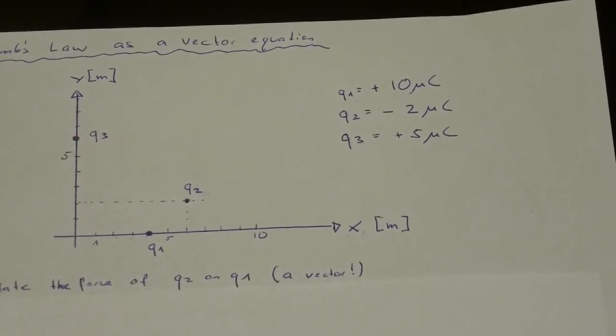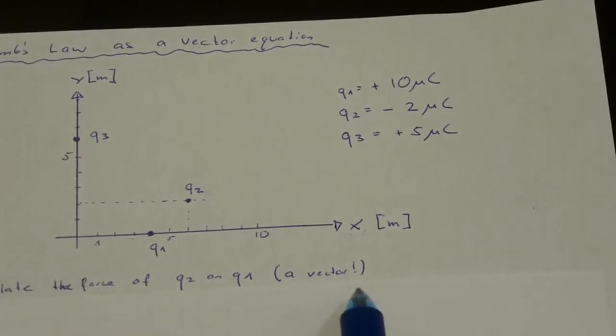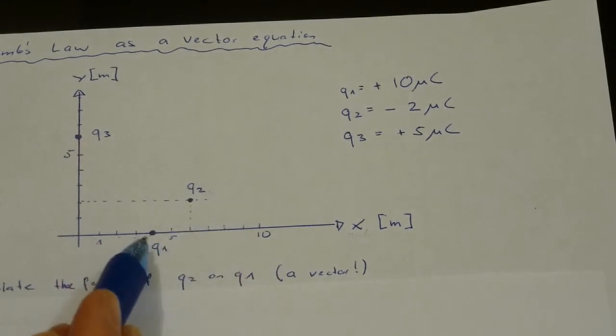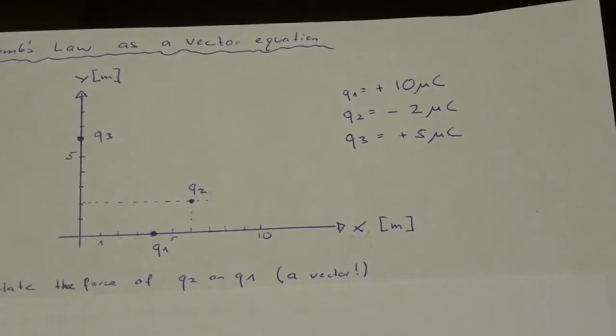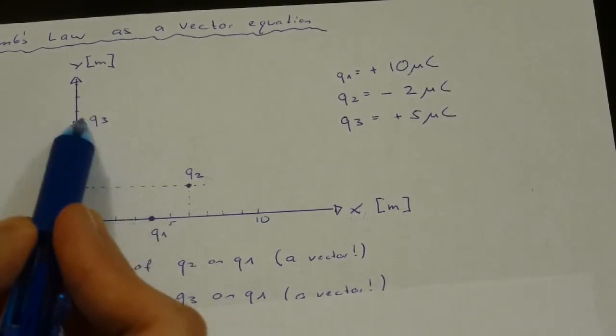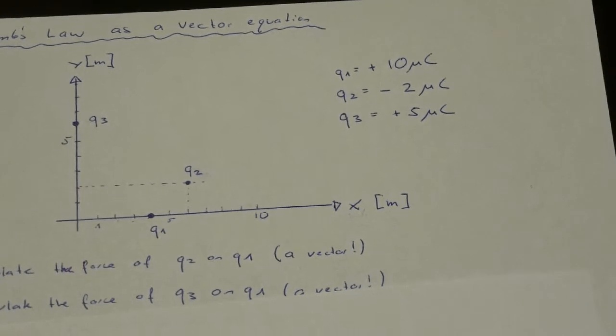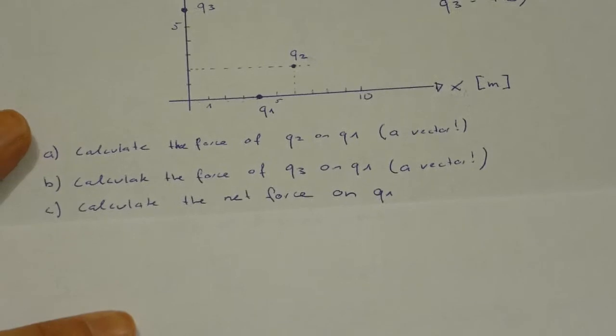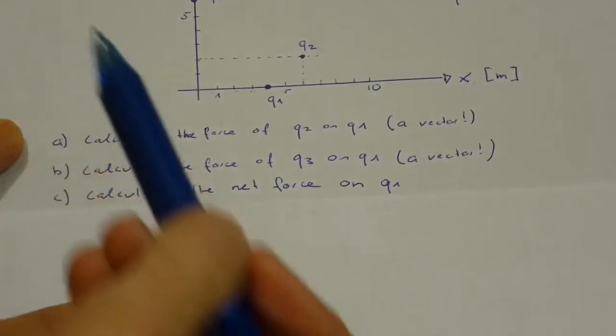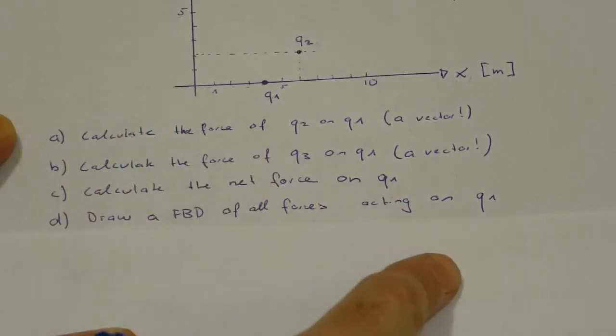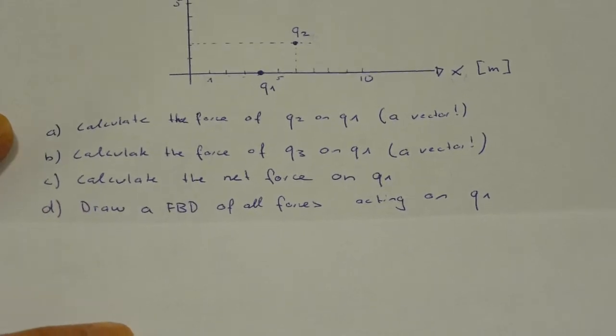Question A will be: calculate the force as a vector exerted by q2 on q1. In B, we will ask what is the force exerted by q3 on q1, and in C we want to know the net force on q1. Then we can make a little sketch, a little free body diagram of all the forces on q1 to see if the solution we obtain in C actually seems to make sense.